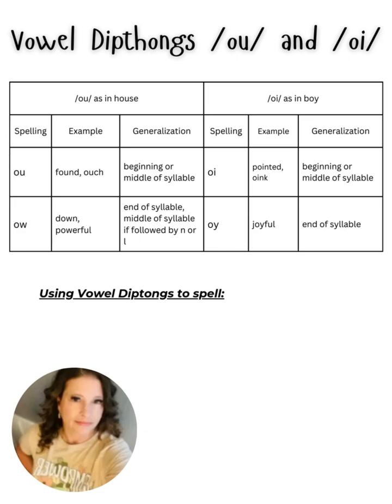On the first side of our notes, you have the OW, as in house, and the OI, as in boy, generalization chart. Looking at OW as in house, you have the spelling O-U. Examples are found in 'ouch'. These generalizations happen at the beginning or the middle of syllables.